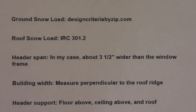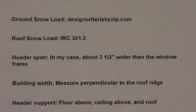The second thing is the roof snow load, which I found by going on my city's website — it referenced IRC 301.2. The third thing is the header span, meaning the size of the header above the window. In my case the header is going to be about three and a half inches wider than the actual window frame. The fourth thing is the building width, which you measure perpendicular to the roof ridge. The fifth and last thing is the header support — what the header is going to be supporting above it. In my case I'm supporting the floor above, the ceiling above, and the roof above.